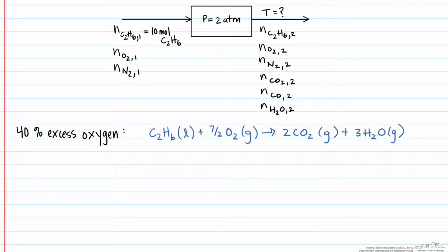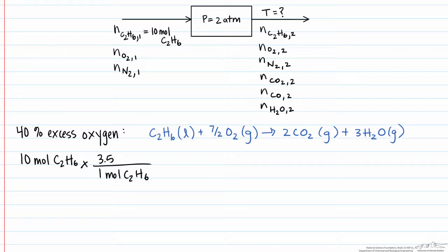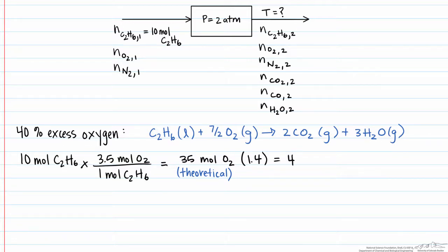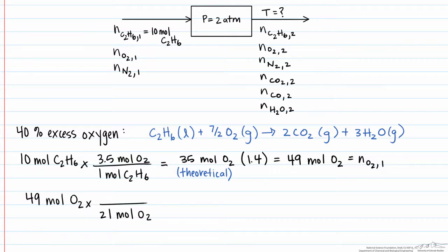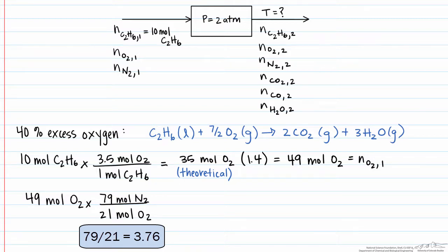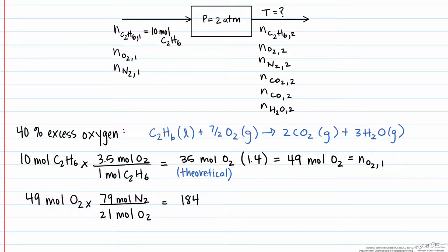For every mole of ethane, we're going to need 3.5 moles of oxygen. So if we have 10 moles of ethane, we multiply it by 3.5, which gives us our theoretical amount of oxygen. However, since we have 40% excess, we multiply this by 1.4, and we end up with 49 moles of oxygen coming in. From that we can find the number of moles of N2 coming in, since the relationship is 3.76 times the number of moles of O2 equals the number of moles of N2, which equals 184 moles.